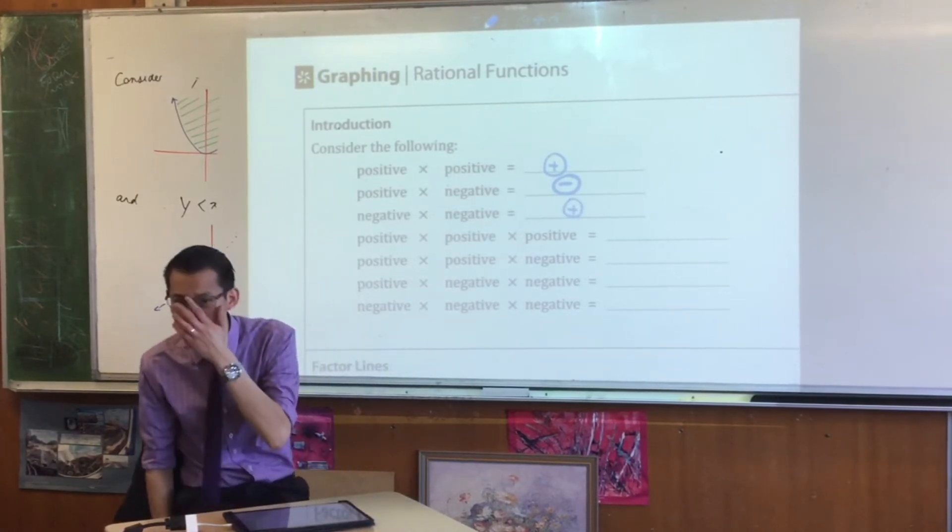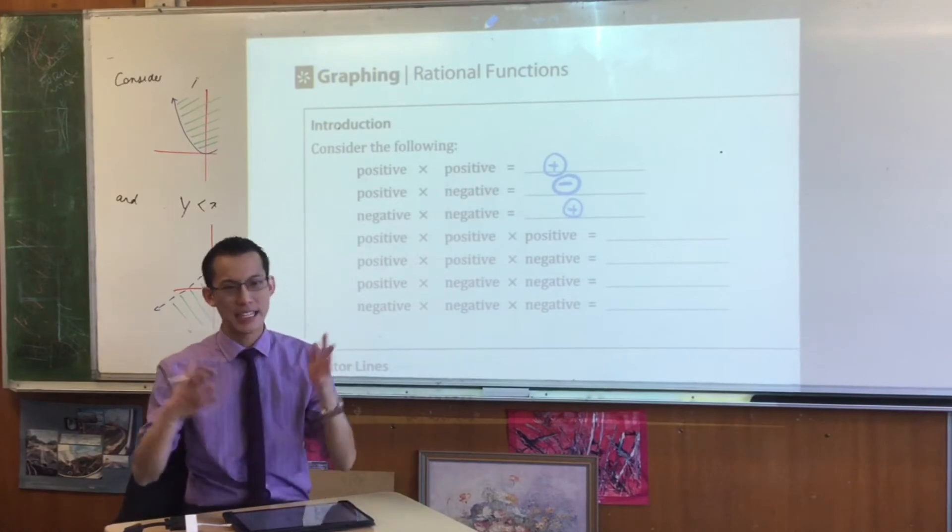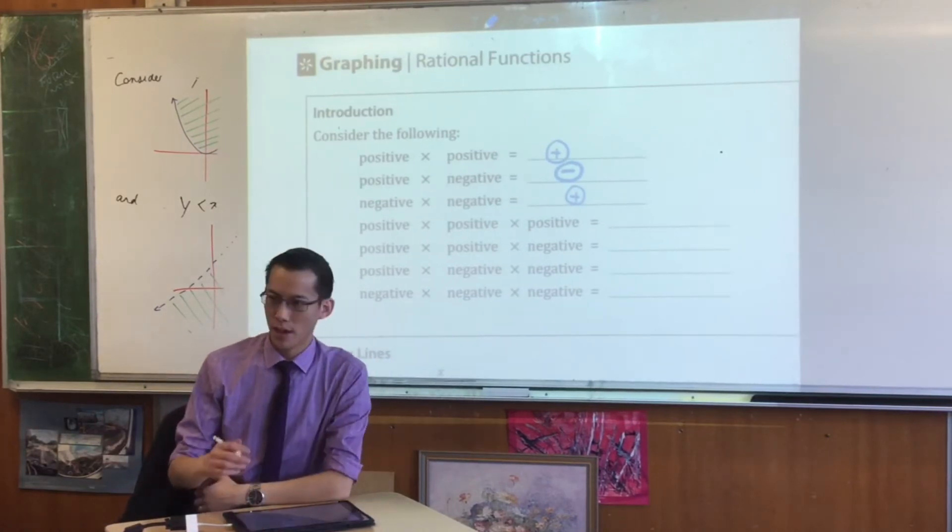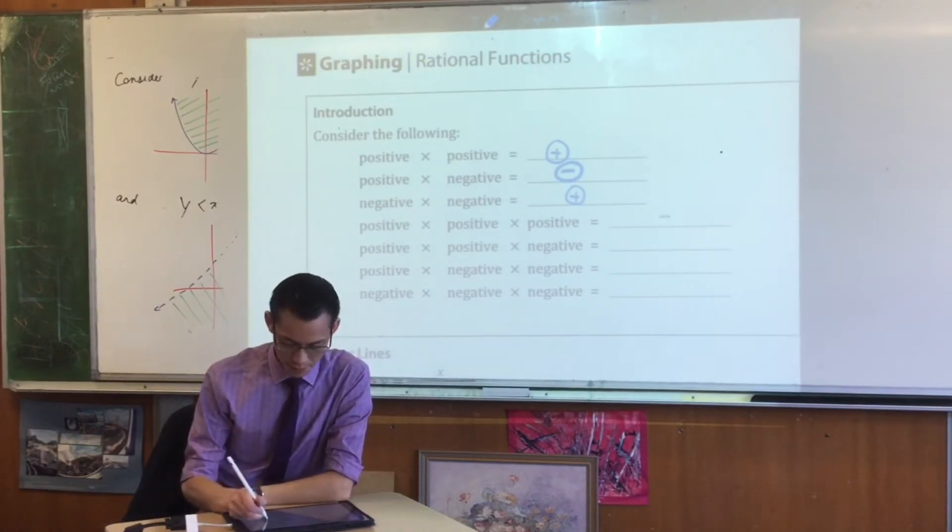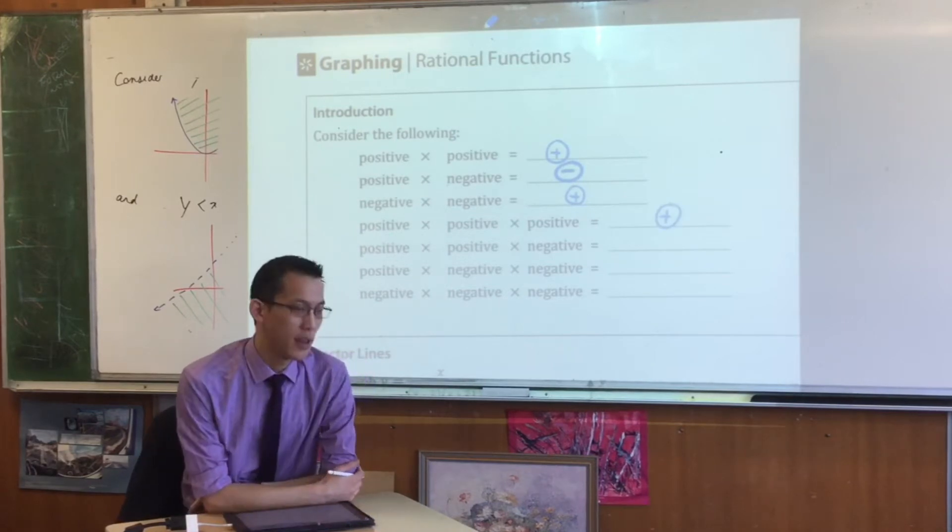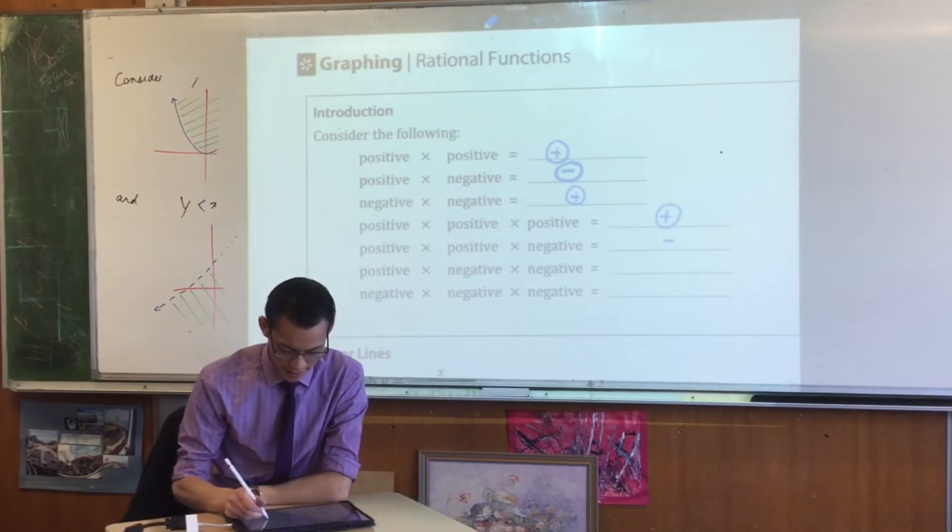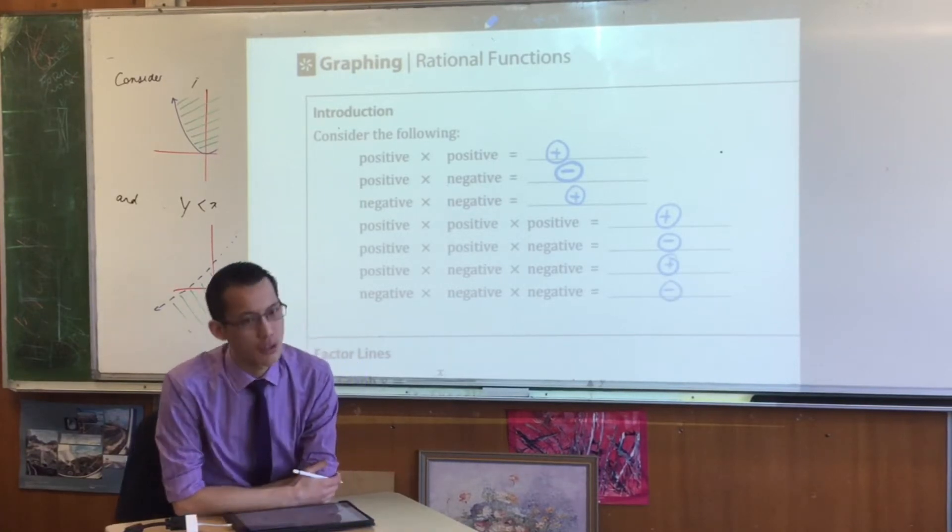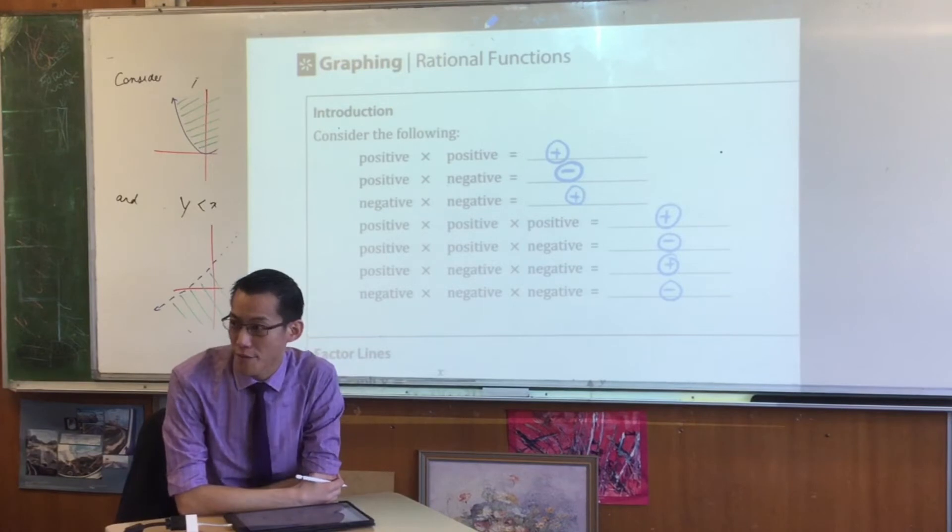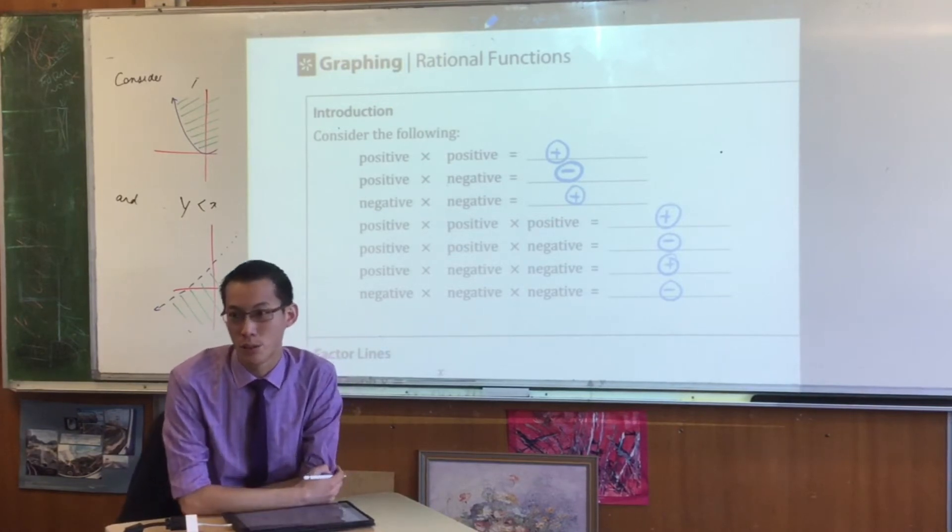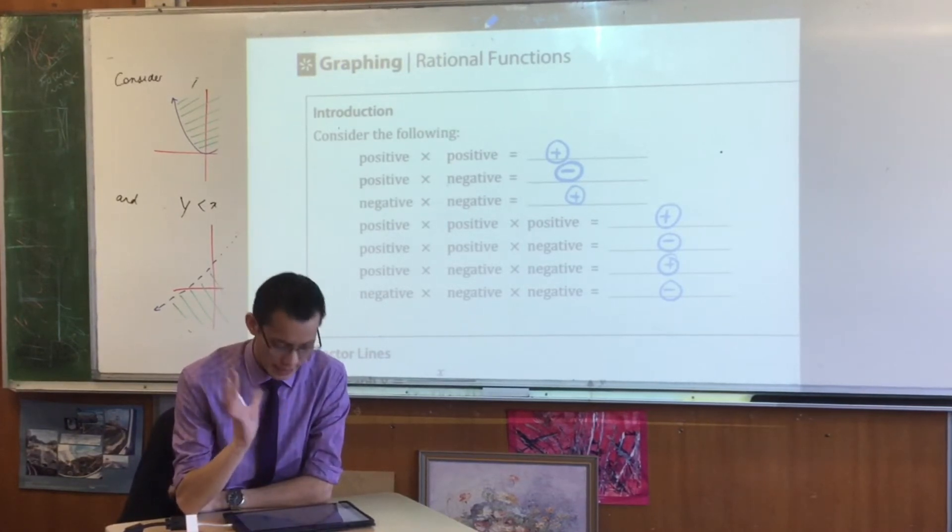This principle continues as the number of factors increases. Three positives is still going to be positive, two positives and a negative gives negative, and you could extend this to four or five factors, which we are going to look at as we graph.